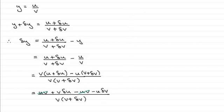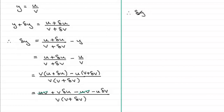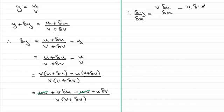Now if I divide both sides by delta x, we have delta y over delta x equals v·delta u over delta x, minus u·delta v over delta x, all over v multiplied by v plus delta v.